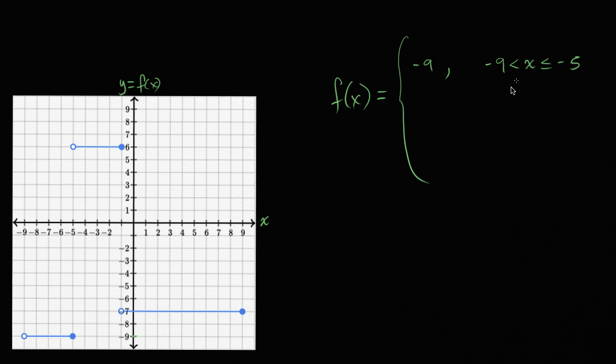It's very important to look at this as negative 9 is less than x, not less than or equal to. If it were less than or equal, then the function would have been defined at x equals negative 9, but it's not — we have an open circle right over there.